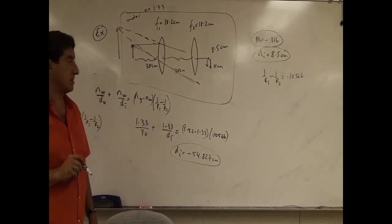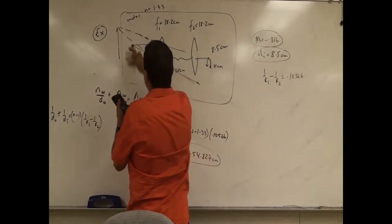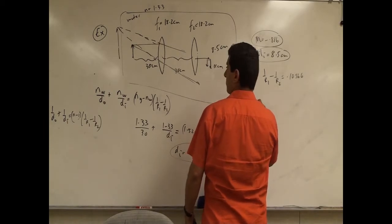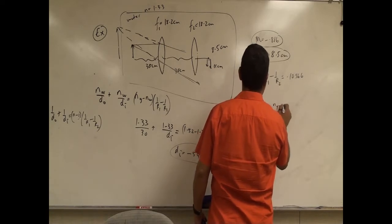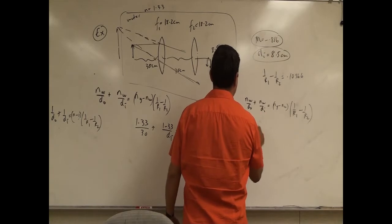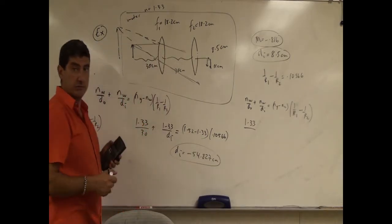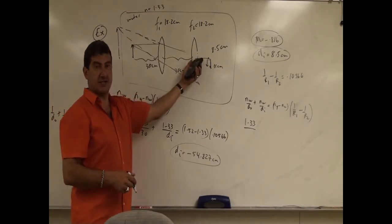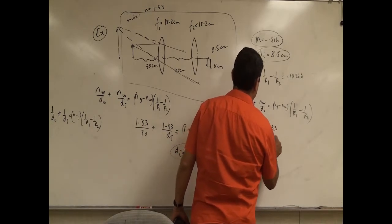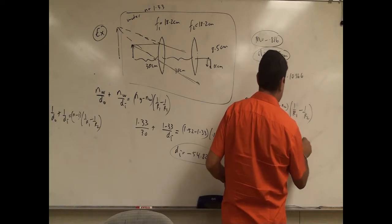That virtual image will act as a real object for the second lens, because that lens thinks the original object was actually there. So we need another equation: N_water over D_O plus N_water over D_I equals (N_glass minus N_water) times (1 over R1 minus 1 over R2). N_water is 1.33. Since the virtual image is 54 centimeters to the left of the second lens, we add 30 to get D_O equals 84. So: 1.33 over 84 plus 1.33 over D_I equals 1.52 minus 1.33, which is 0.19, times 0.10566.